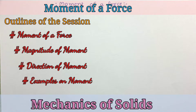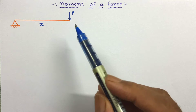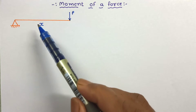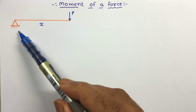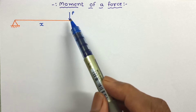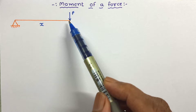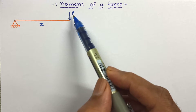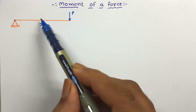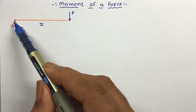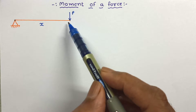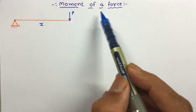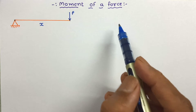Let us start with Moment of a Force. Here in this figure, we can see a part of a beam. A load is applied on the beam at distance x from the support. Due to this load, this beam tries to rotate about this point — there will be a turning effect on this beam about this point. This tendency of a force to rotate anybody about any given point or axis is called Moment of a Force.